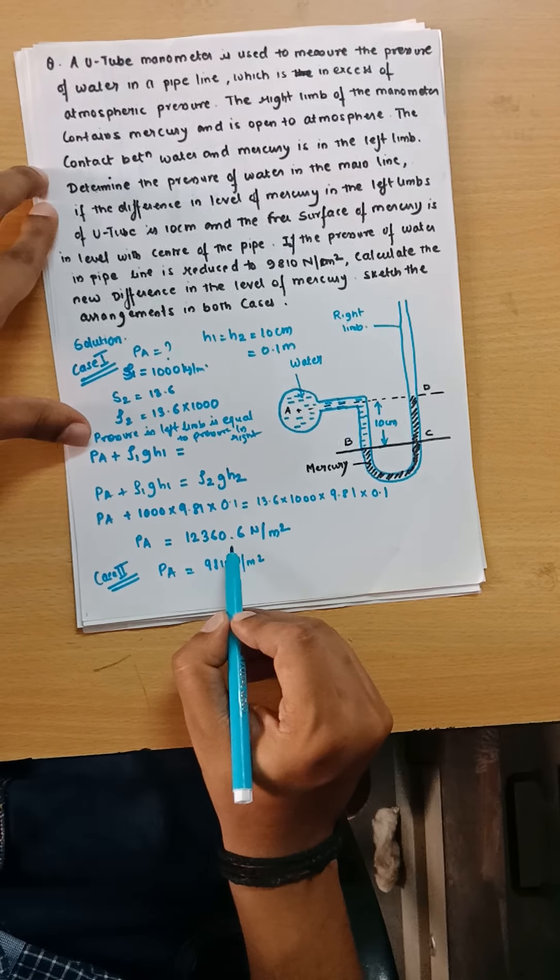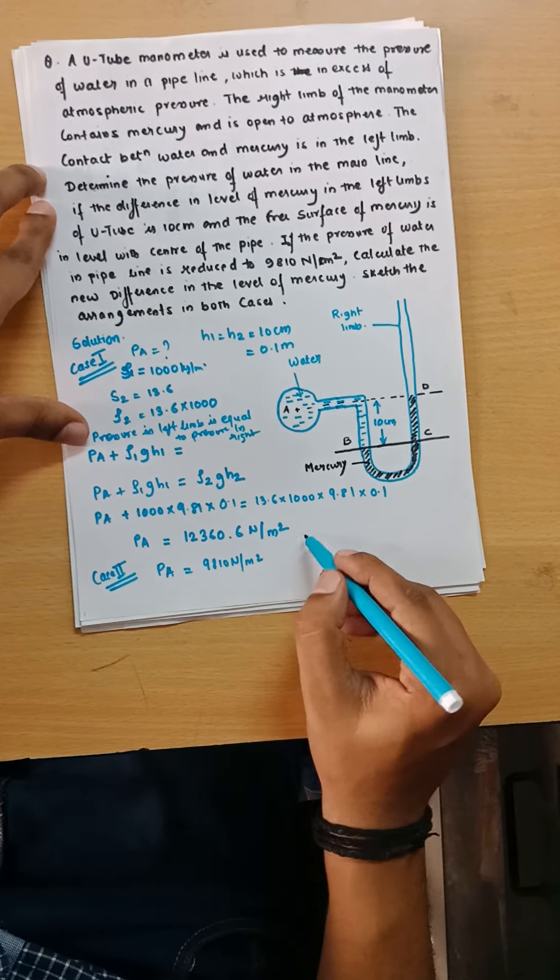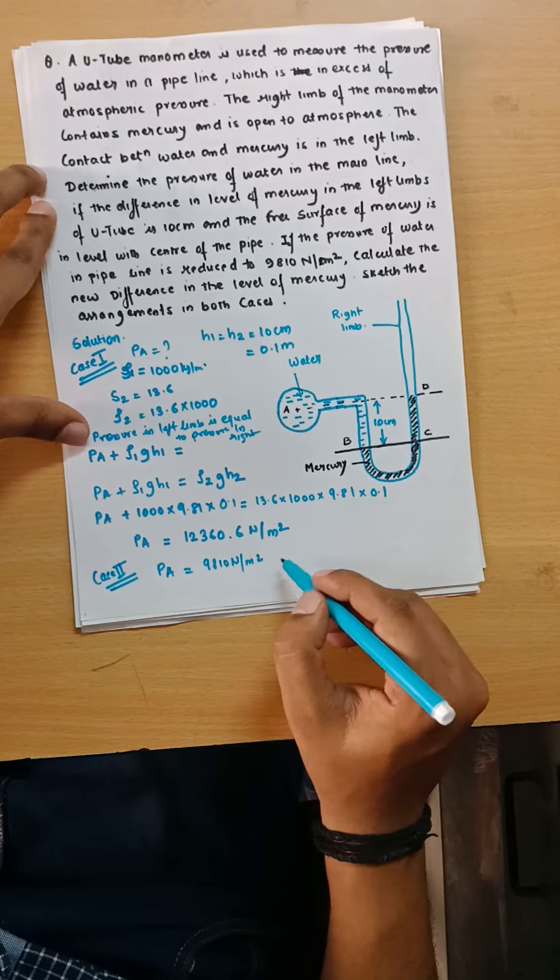Now we will see the second case, that is Case 2, in which the pressure at A is given as 9810 Newton per meter square.